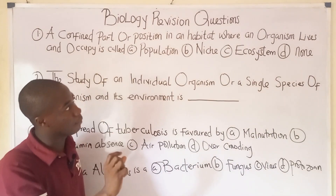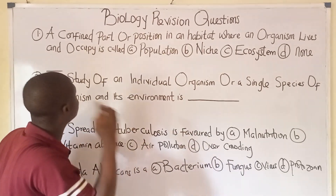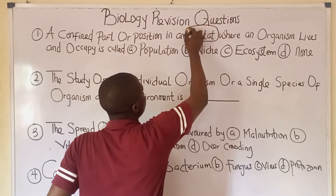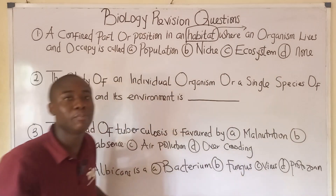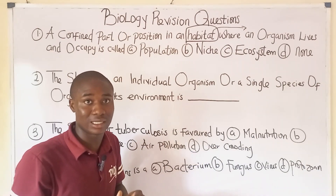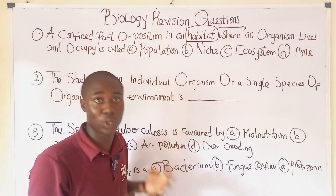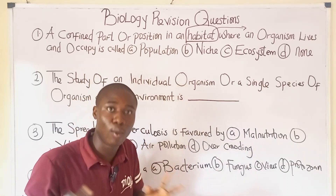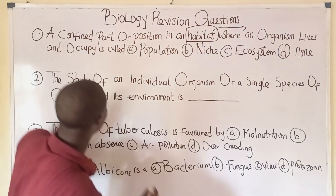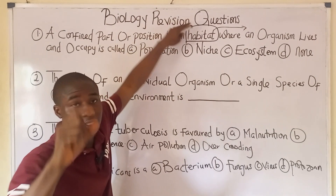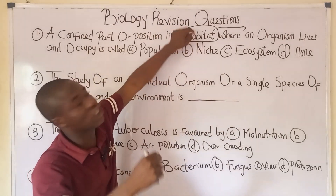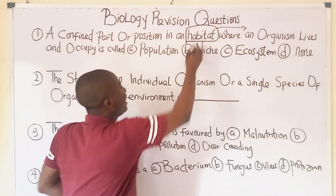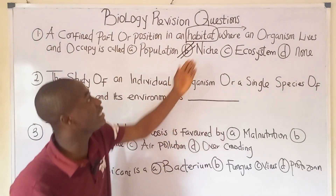The first question asks: a confined path or position in a habitat where an organism lives or occupies is called what? First, we need to know what habitat means. Habitat is simply the dwelling place of an organism. We have three major habitats: the aquatic habitat, the terrestrial habitat, and the arboreal habitat. A confined path or position in a habitat where an organism lives is called a niche.